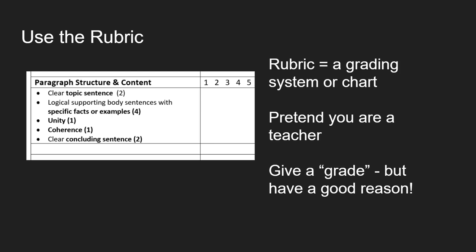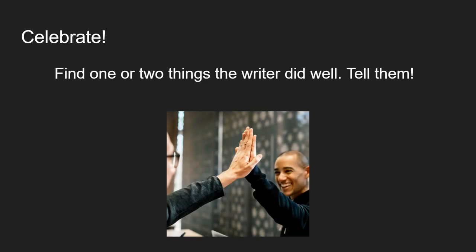After you have read the writing and reviewed the rubric, you want to give feedback to your classmate. And first you should celebrate — find one or two things that the writer did well and tell them. Use the rubric to guide you. Sometimes it can be challenging to find something good in writing, so it could be something simple like the paper was very organized and neat, or they did the title correctly. You can always find something positive to celebrate about what the writer created.